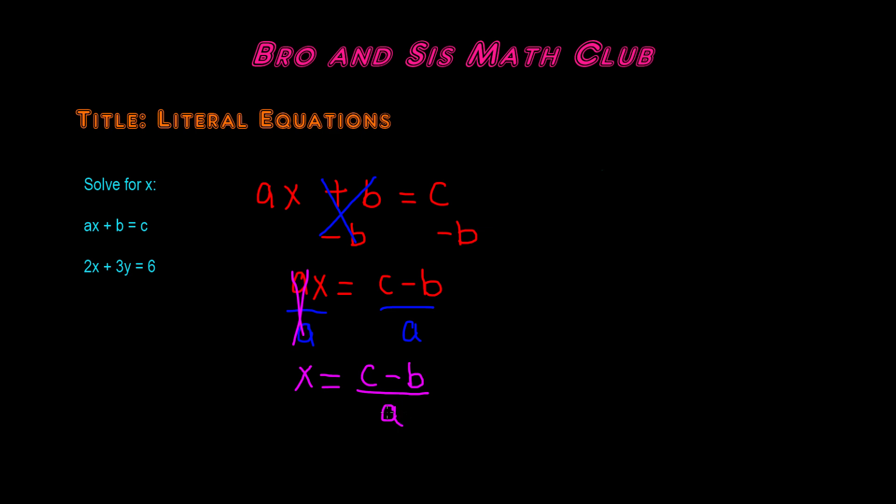And that's it. We have our solution to the literal equation. So as you can see, we're not trying to find the value of x. We're just trying to isolate it. So x is equal to c minus b over a.